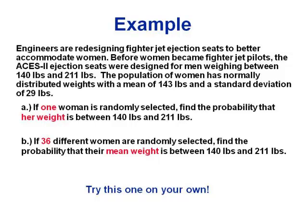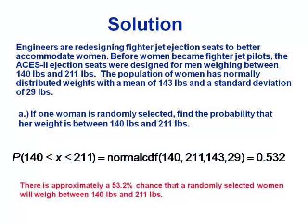We'll also look at a group of 36 women and find the probability that their mean weight falls in that range. For the single-woman case, since we want the probability between two numbers, we can just use normalCDF with bounds 140 and 211, mean 143, and standard deviation 29. That comes out to 0.532 — a 53.2% chance. This also means 53.2% of women have weights in that range; the probability equals the percentage of the population.